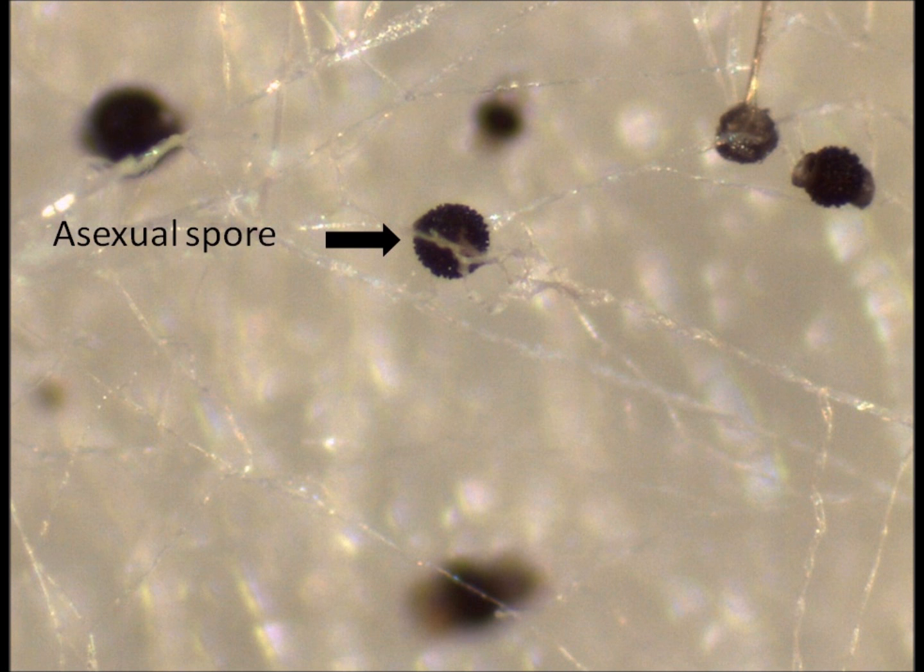Now the second picture is the same shot, only I've changed the focal plane using the focusing knob, and now you should be able to see this asexual spore. It's quite clearly different because it doesn't have those swollen hyphae.